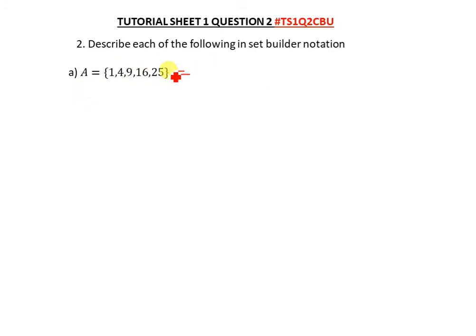Looking at these numbers, they are all perfect squares. So you're going to say x is such that... When describing sets in set builder notation, you're not limited to one solution — there are many ways to write this, as long as the output is the same and you've used correct mathematical language, you'll still be marked correct.